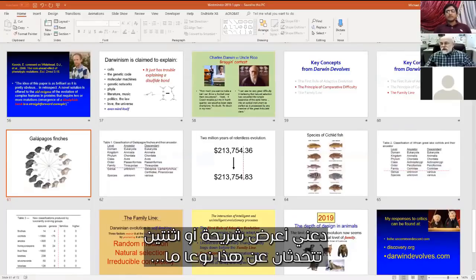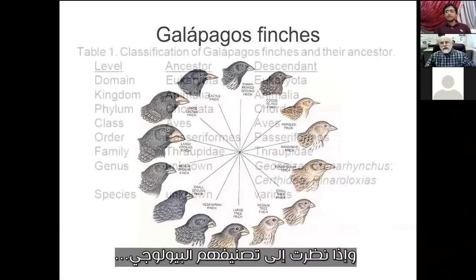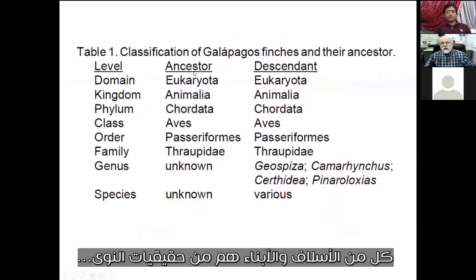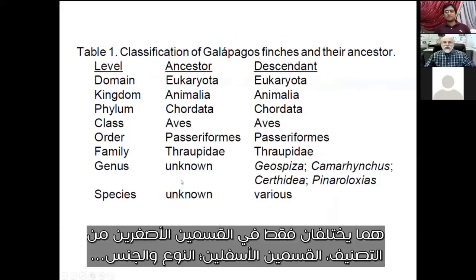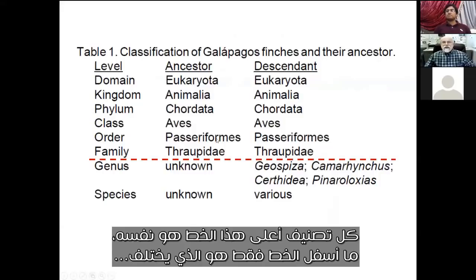Let me show you a slide or two that kind of speaks to that. Here are the Galapagos finches, and if you look at the biological classification of them versus their ancestor, both the ancestor and the descendant finch are eukaryotes — that's the domain — they're animals, they're animals with backbones, they're birds, and so on. They differ only in the two smallest categories, the two bottom categories, species and genus. Everything above this line is the same; only below the line is different.